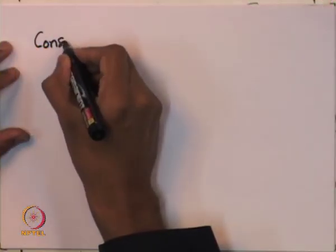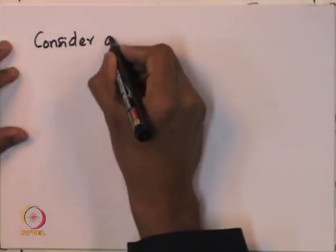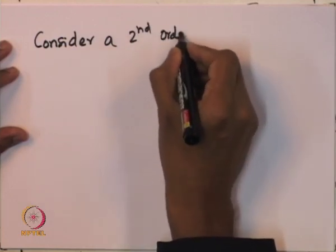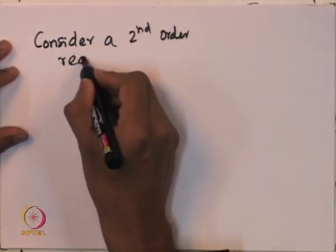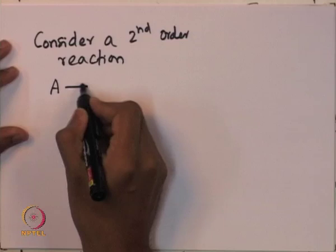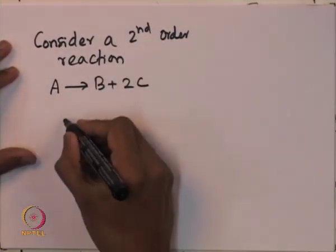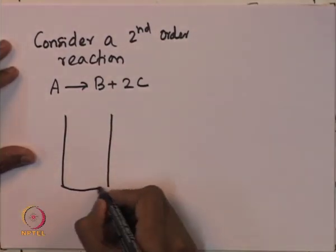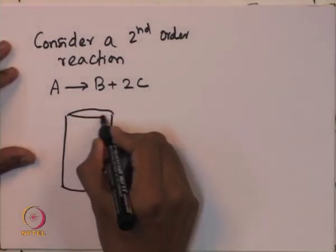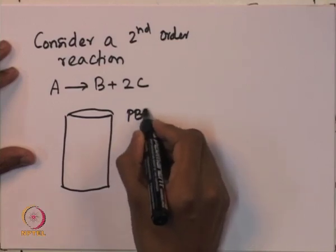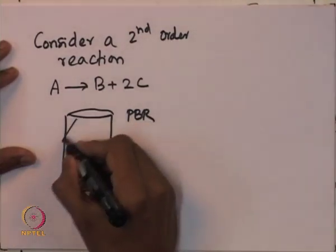Friends, let us look at an example problem for packed bed reactor design. Consider a second order reaction A going to B plus 2C. Now suppose if this is a tubular packed bed reactor filled with catalyst.